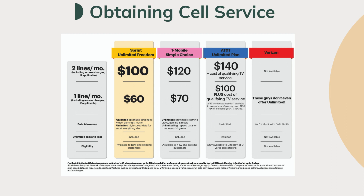Here is an example of a cellular service plan in the USA from Sprint, T-Mobile, and AT&T. Sprint has the most budget-friendly plan — two lines for only $100 a month with unlimited data, talk, and text. AT&T has the highest fees at $140 for two lines. Most of them are offering unlimited data usage and unlimited talk and text.